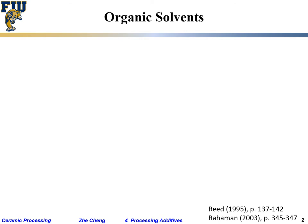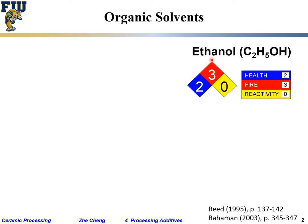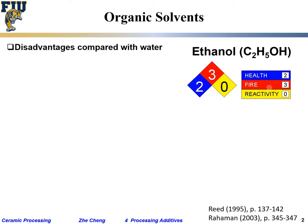After talking about water as an aqueous solvent, let's talk briefly about organic solvents. A common one is ethanol. On safety labels, blue indicates a health hazard, red indicates a fire safety hazard, and yellow indicates reactivity. Ethanol is not very reactive but is a fire hazard — it can burn and potentially explode depending on conditions.